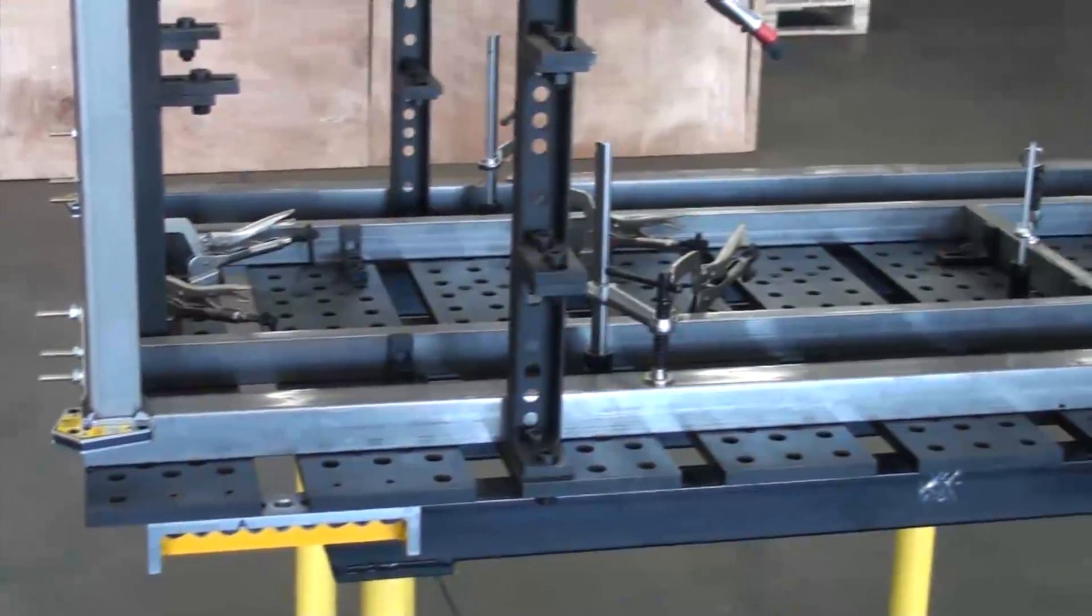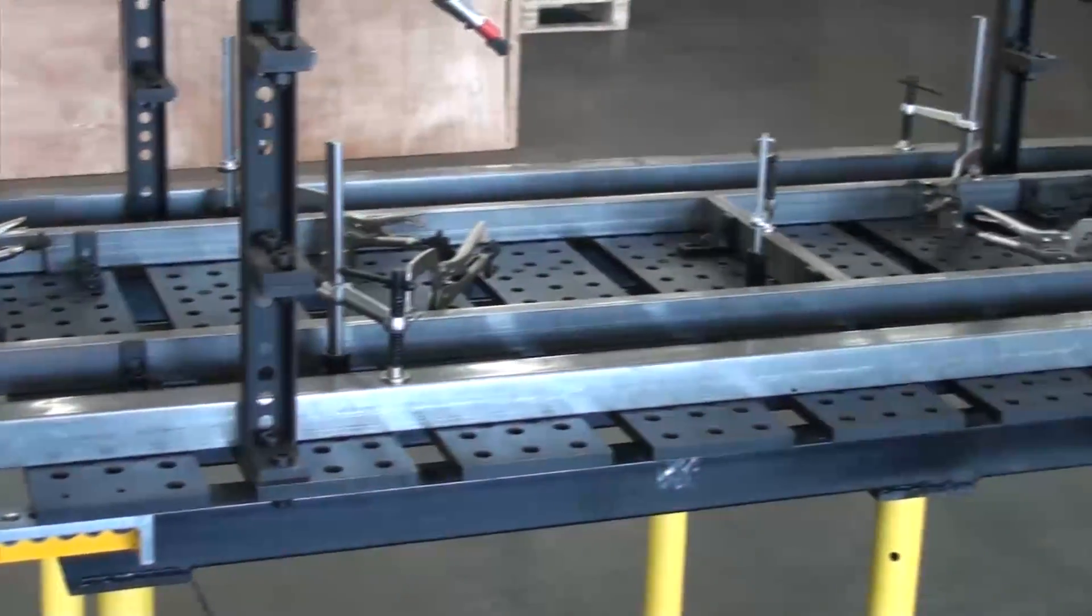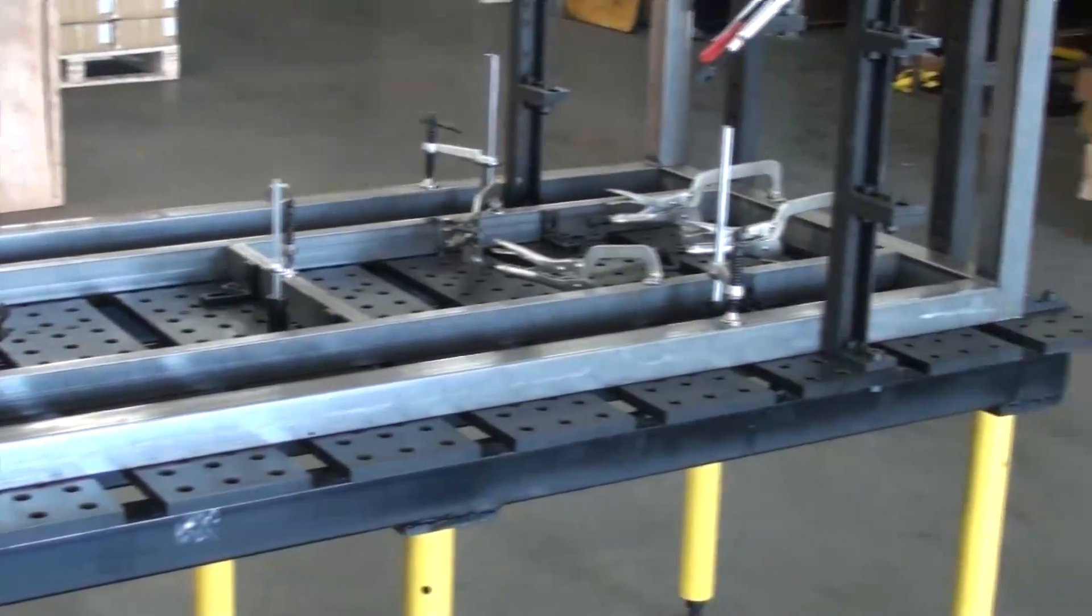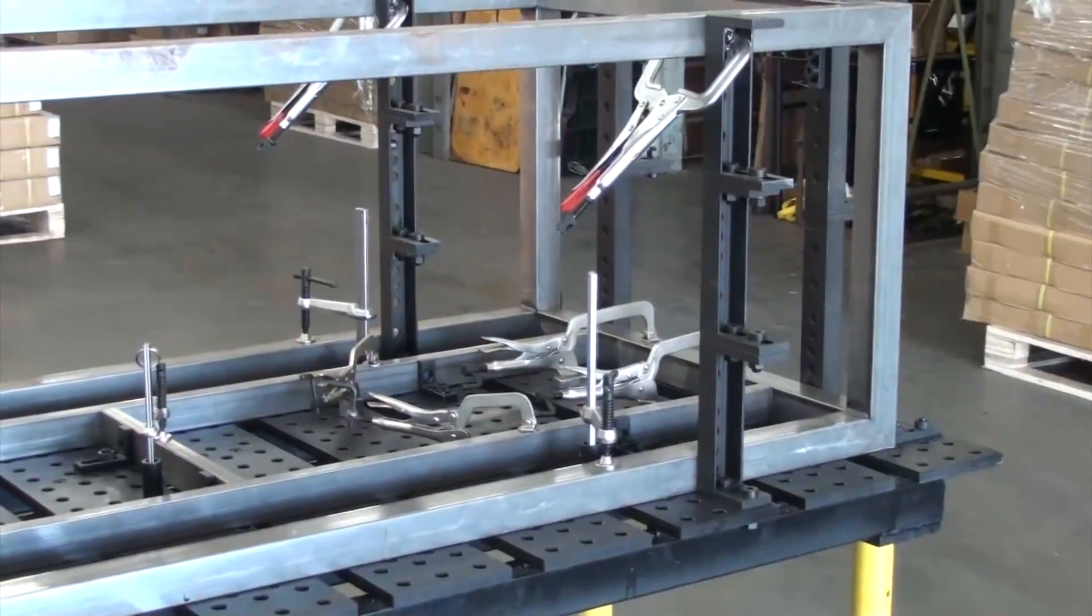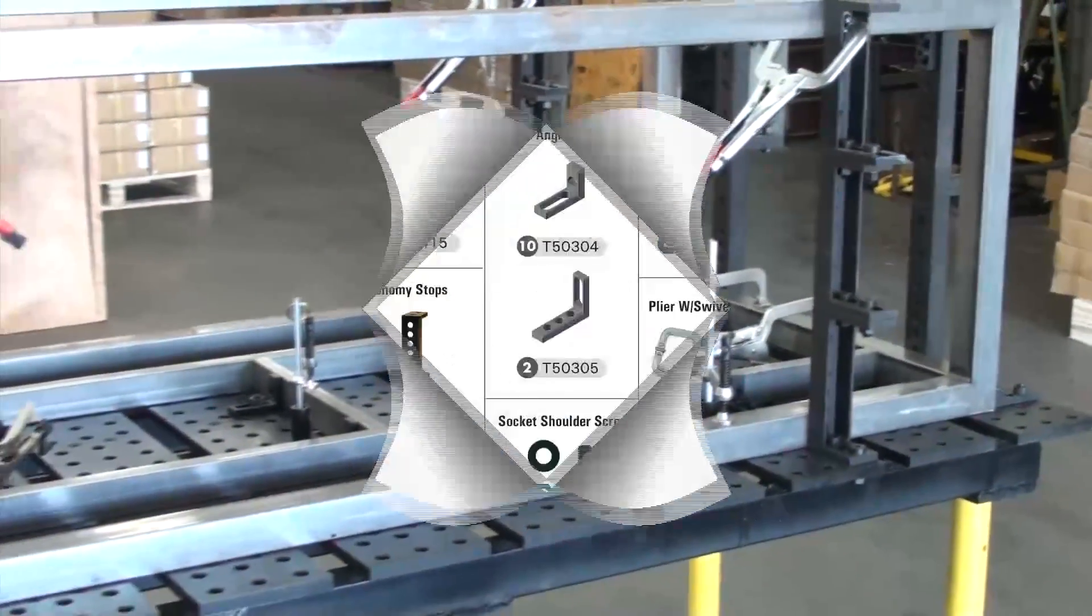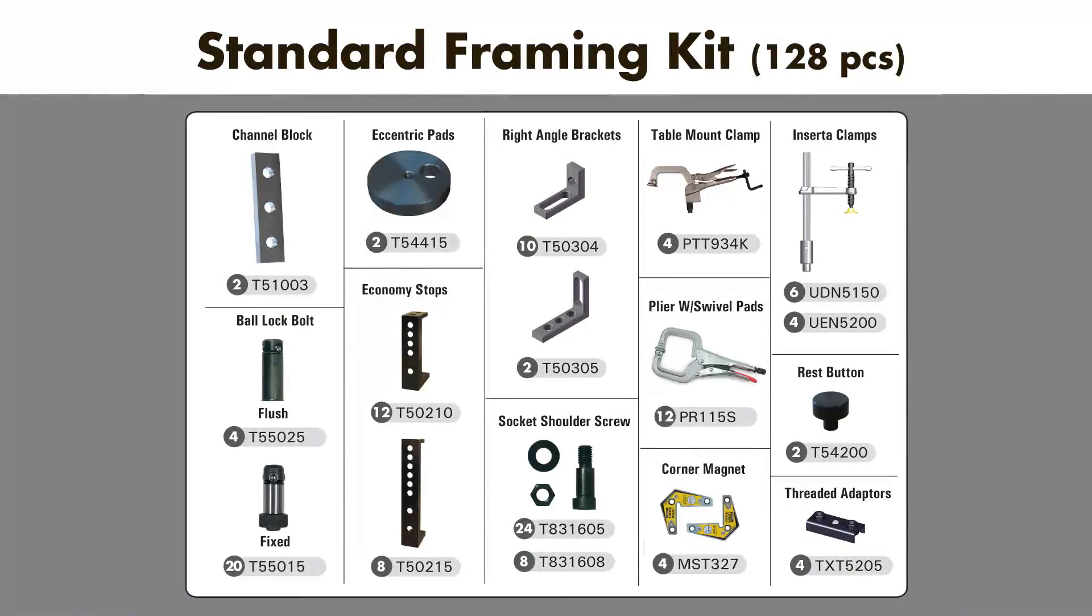In the first video, we expanded the 6.5-foot BuildPro table to accommodate our 7-foot long cabinet frame. In this video, we're going to fixture our 7-foot cabinet frame using the new 128-piece BuildPro standard framing kit.